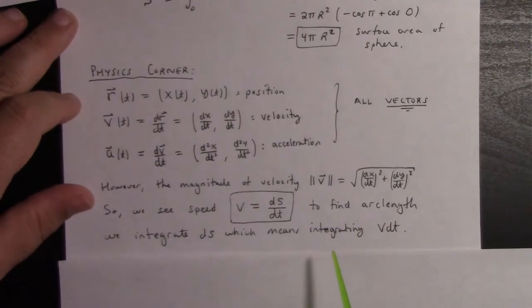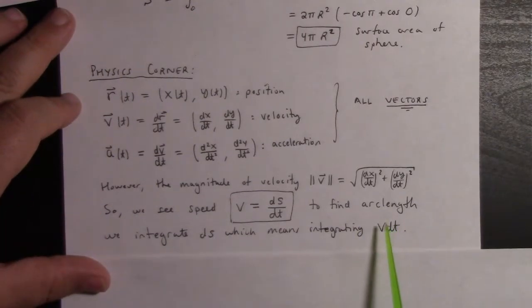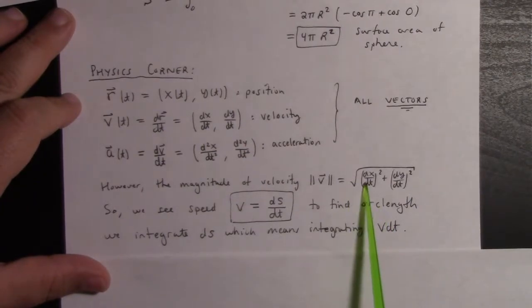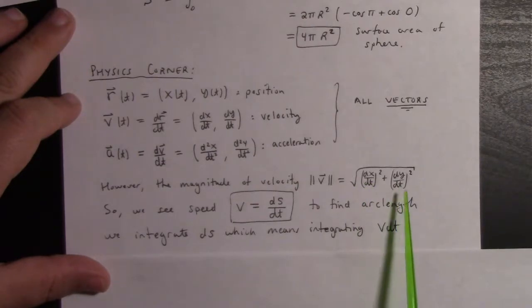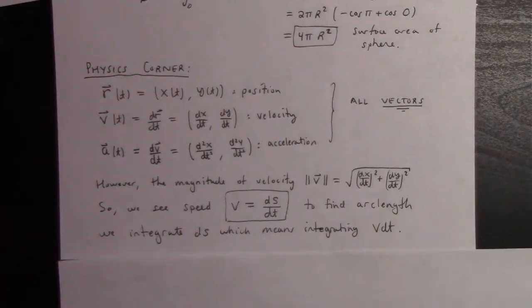So all these things work together, and we can put a sentence together to describe what we're doing to find arc length. We simply integrate ds, and that means we integrate the speed times dt. This v here is √((dx/dt)² + (dy/dt)²). That's v.